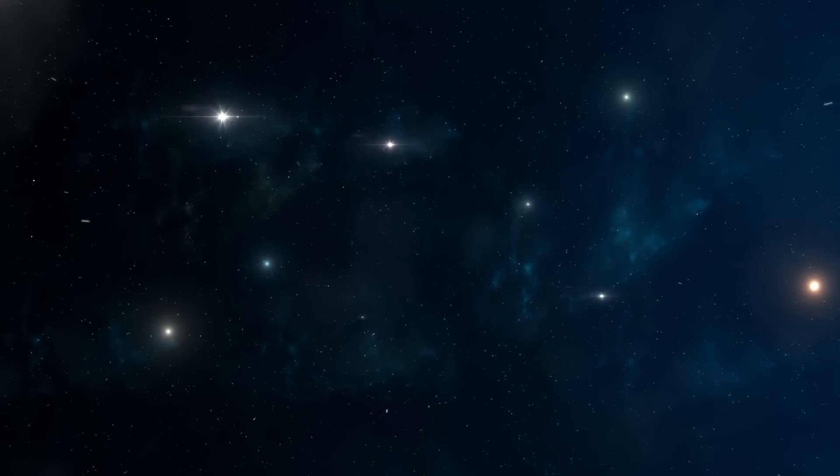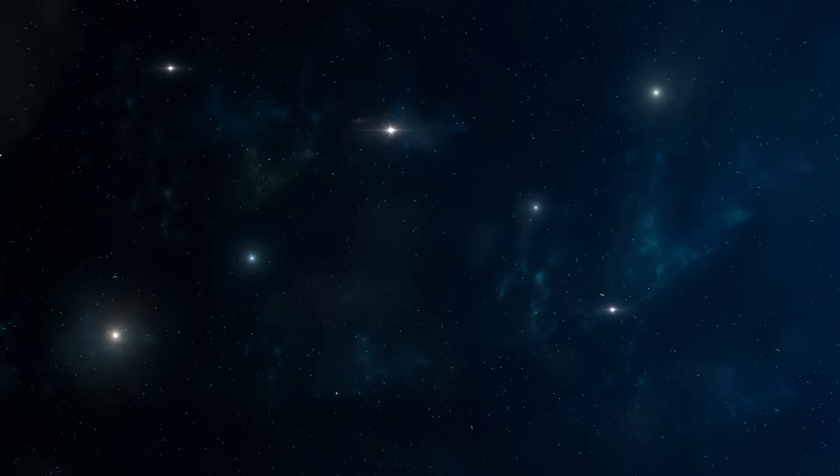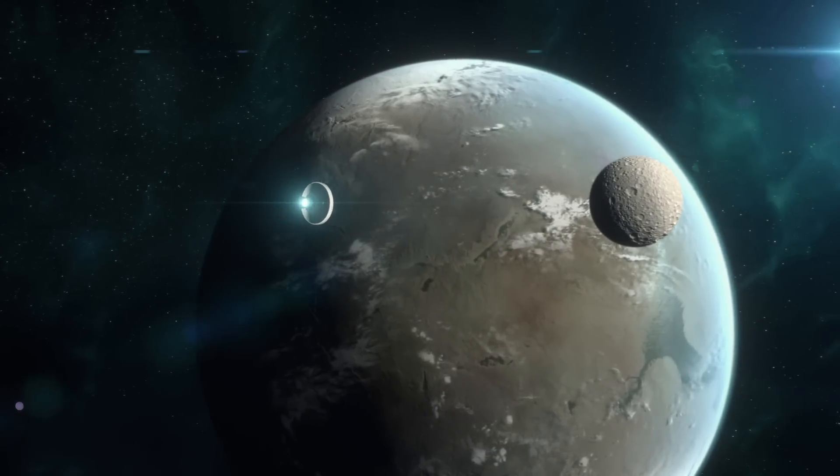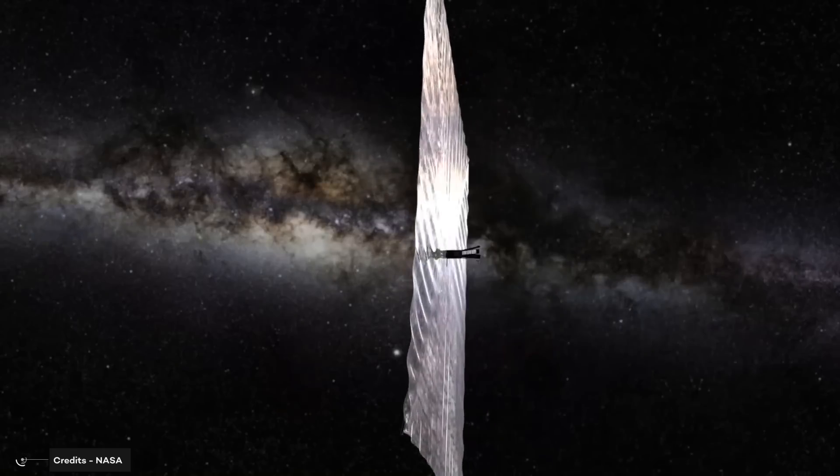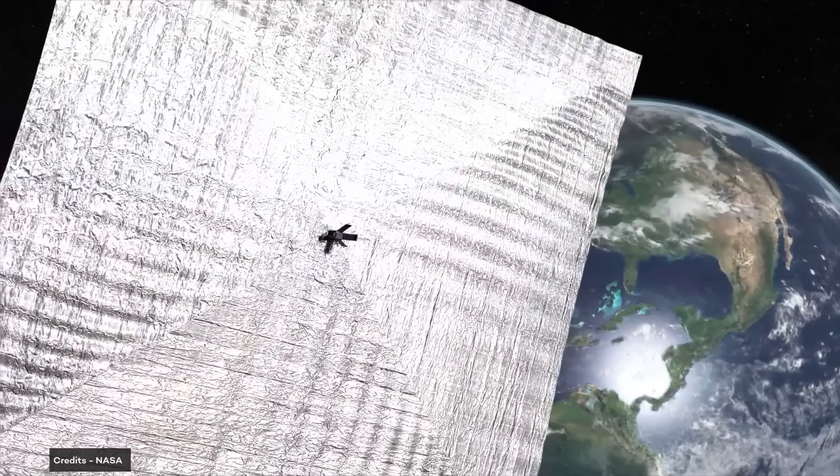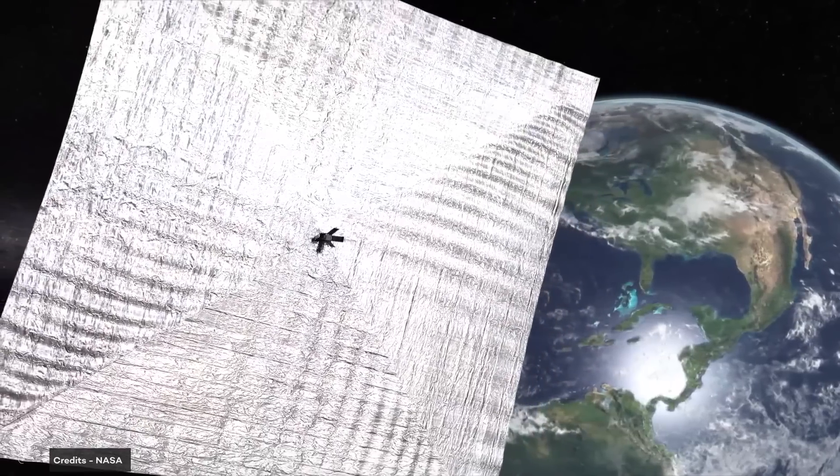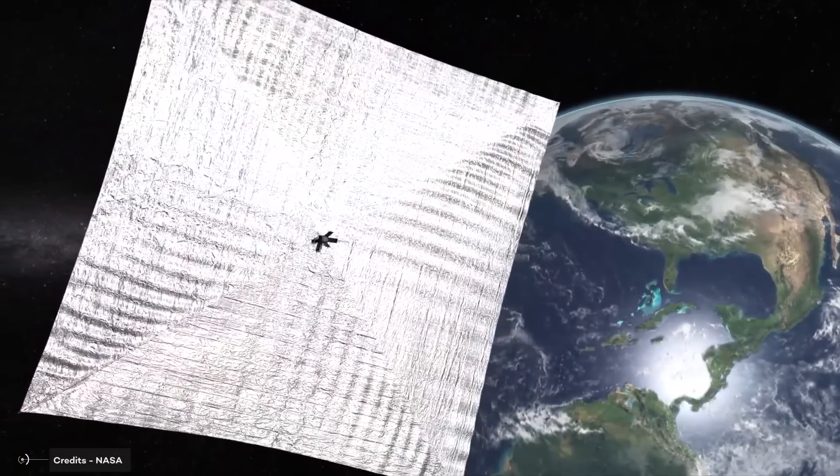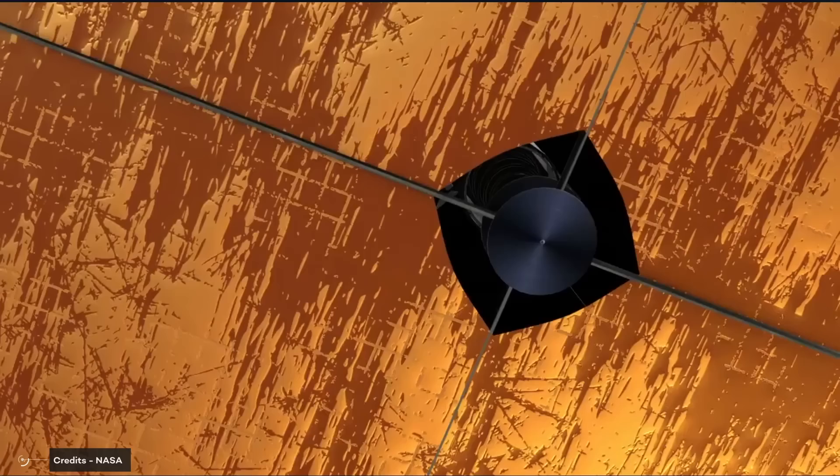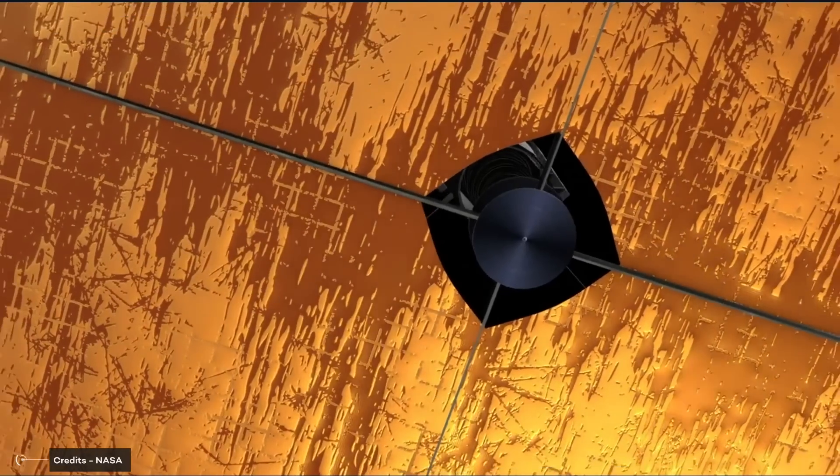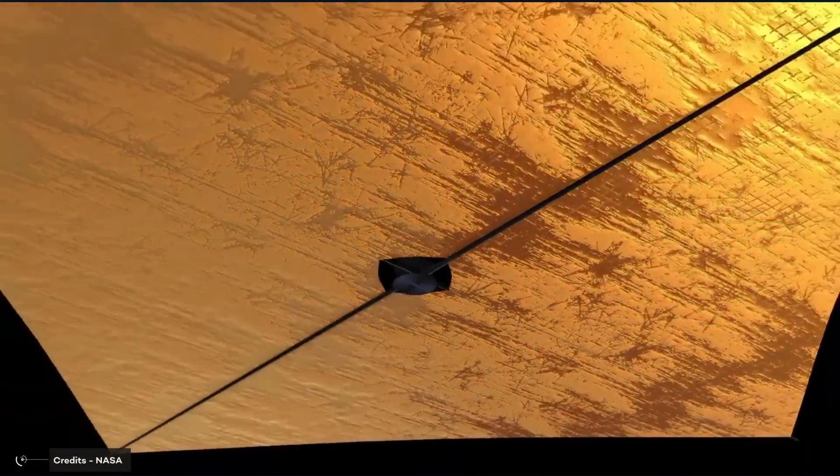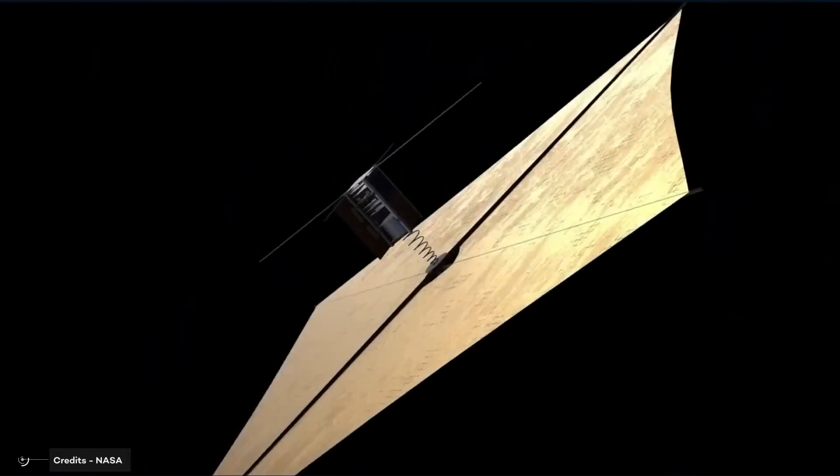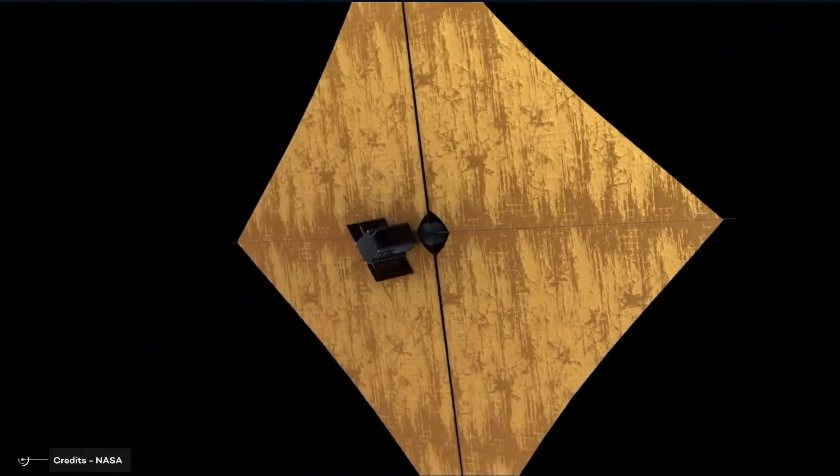Solar sail technology makes it possible to explore distant stars and planets in a way that was previously unimaginable. This technology could allow spacecraft to reach the outer regions of our solar system and beyond, opening up possibilities for future exploration. Solar sail propulsion could also enable us to explore the universe in a new way. By harnessing the power of the sun, a solar sail spacecraft could slowly and consistently accelerate, allowing us to explore distant stars in just a few years.